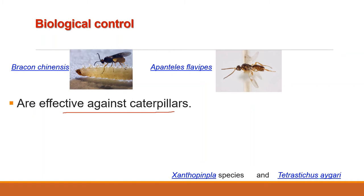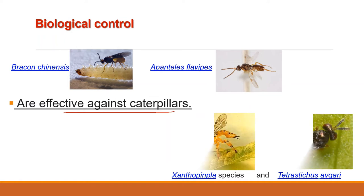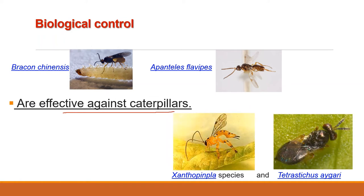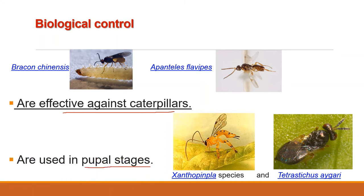Xanthopimpla species and Tetrastichus ayyari are used to control the pupal stage. By using these insects, we can control the different developmental stages of Sesamia inferens.